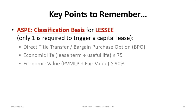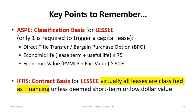For capital lease criteria for the lessee: under ASPE using the classification basis approach, only one of the following is required to trigger a capital lease — a direct title transfer, a bargain purchase option (which assumes title transfer), economic life greater than or equal to 75% (calculated as lease term over useful life), or economic value equal to or exceeding 90% (present value of minimum lease payments divided by fair value). Under IFRS using the contract basis approach, all leases are essentially classified as financing leases unless they are deemed short-term or of low dollar value.